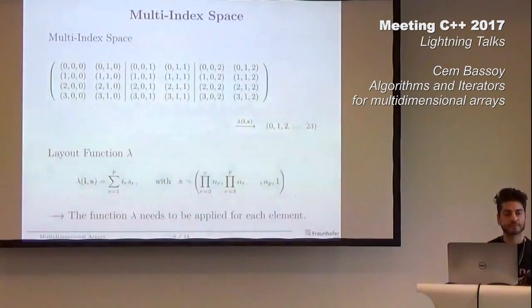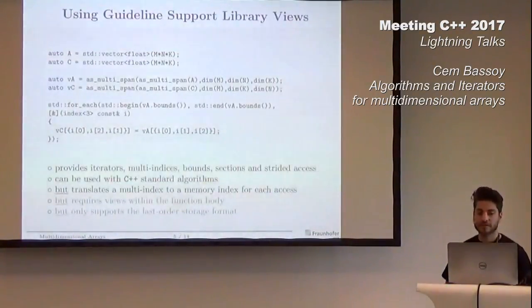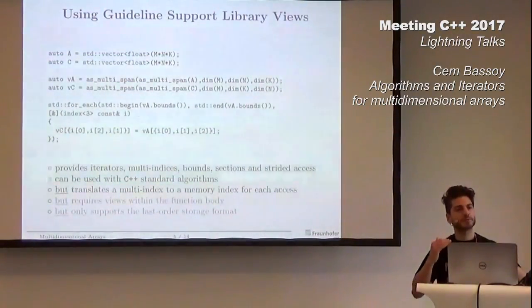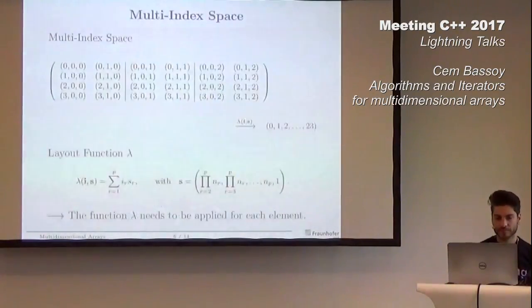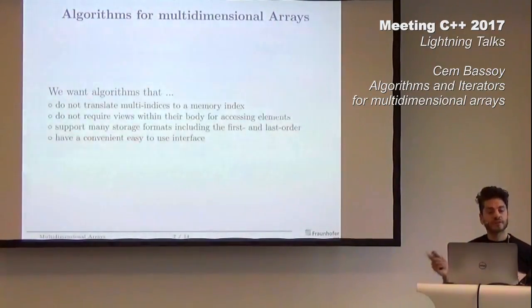This is one crucial thing. What we wanted to do is have separate algorithms for multidimensional arrays that do not translate multi-indices into memory indices and do not require reuse within their body. As you can see in that example, we still need to use the data structures, so we cannot really separate between data structures and algorithms here. We wanted to support many storage formats including first-order and row-major storage and have a convenient, easy-to-use interface.